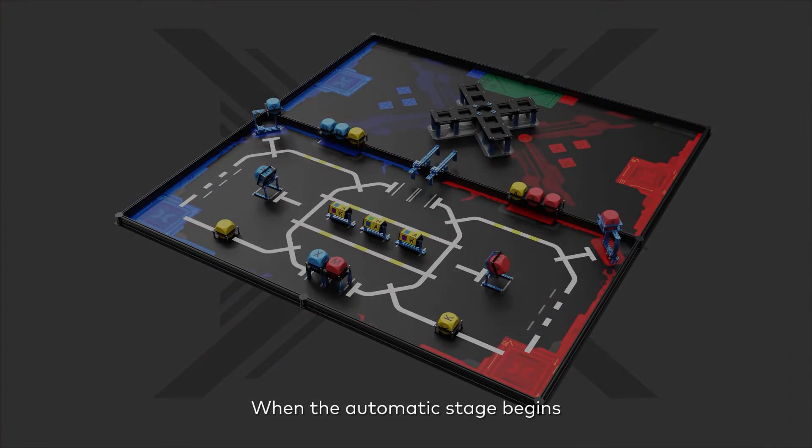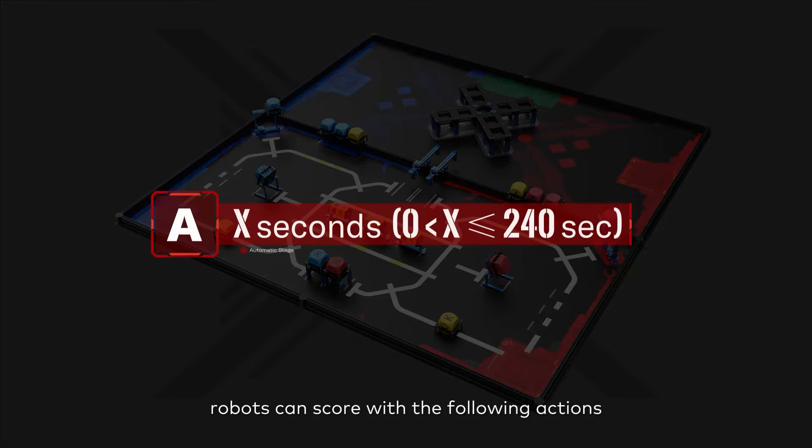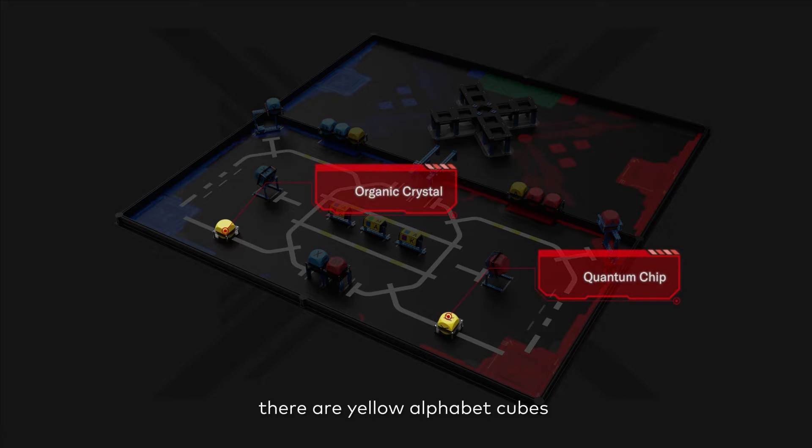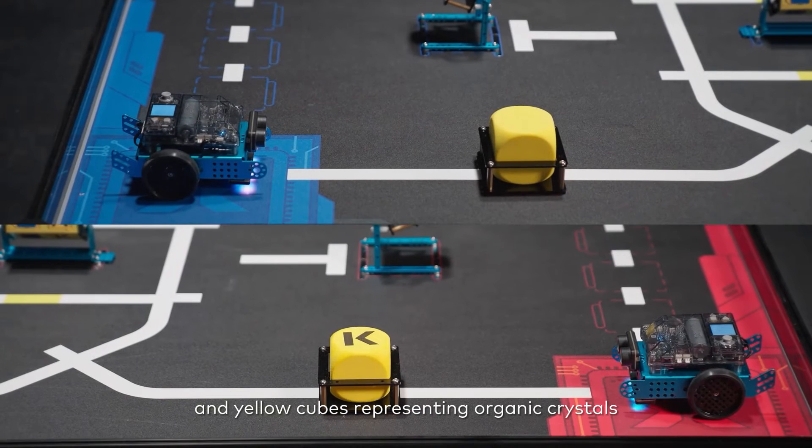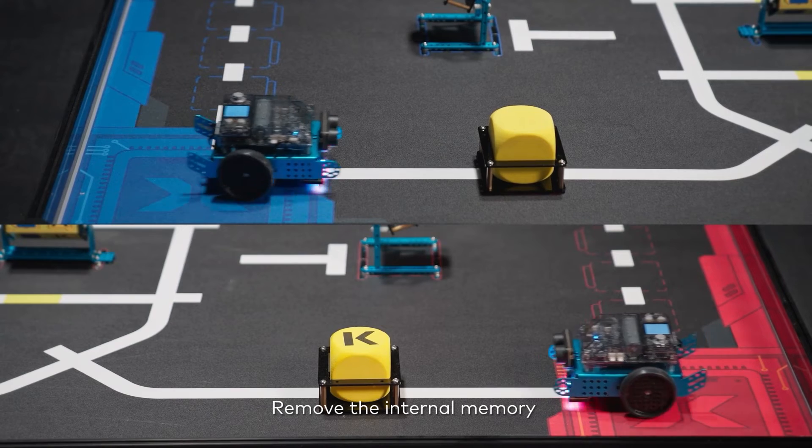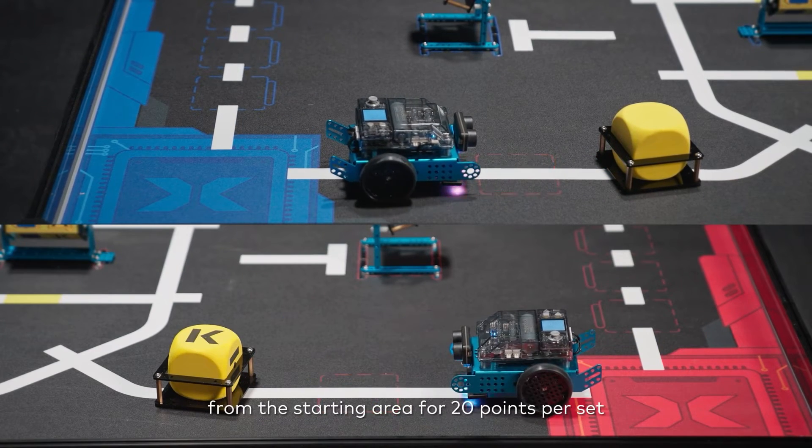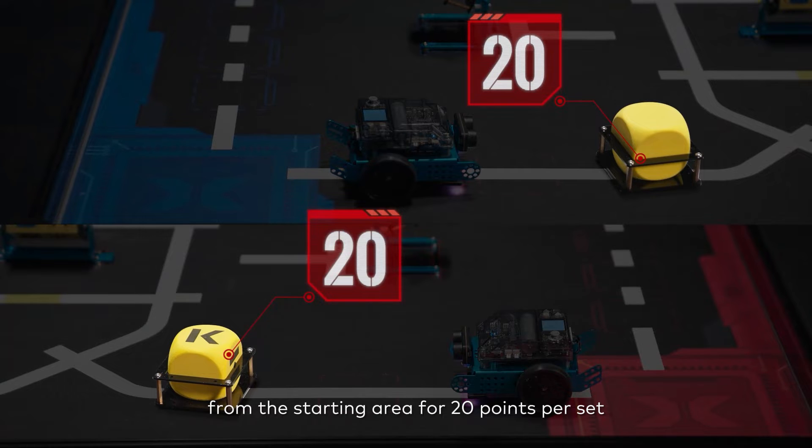When the automatic stage begins, robots can score with the following actions. In the internal memory, there are yellow alphabet cubes representing quantum chips and yellow cubes representing organic crystals. Remove the internal memory with the yellow letter squares or yellow squares in it completely from the starting area for 20 points per set.